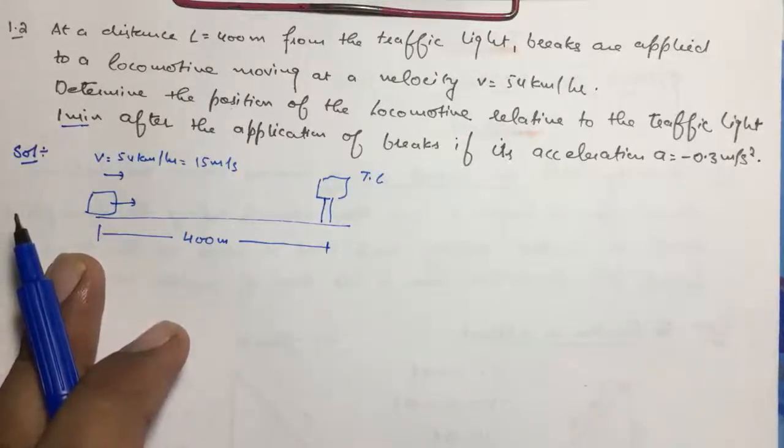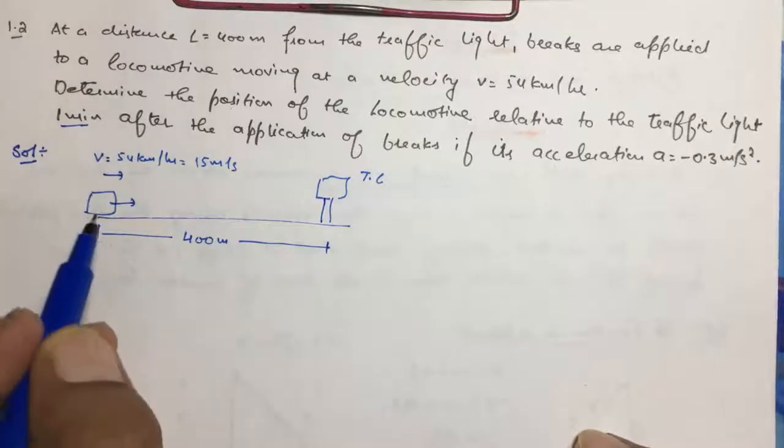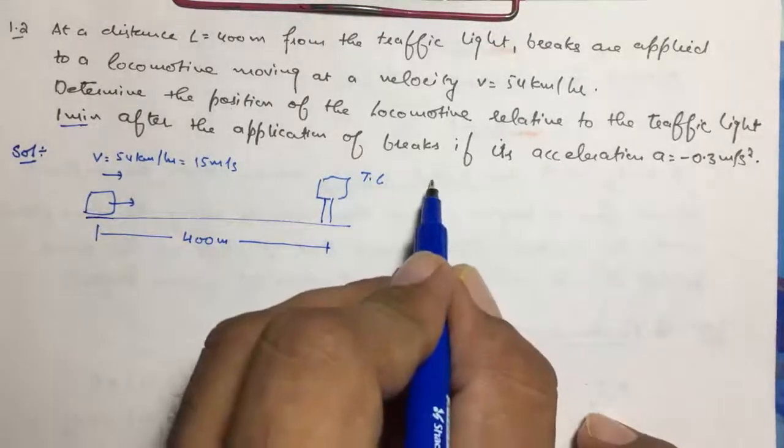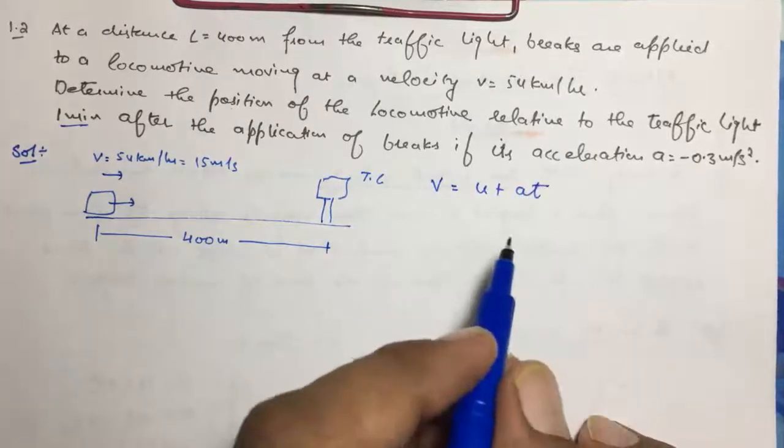Okay, in these type of questions, let's check when it comes to rest, the time in which the locomotive comes to rest. So applying the equation V = U + AT with standard notations,